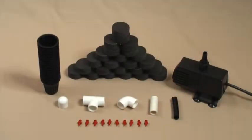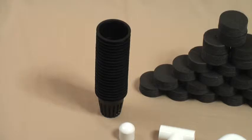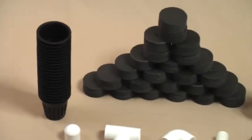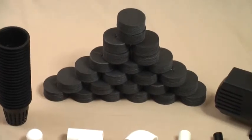Okay, let's go over the parts that we're going to need to build a cloner. The first thing you're going to need is 23 2-inch net pots. You need 24 2-inch neoprene collars.